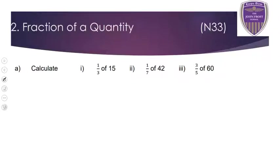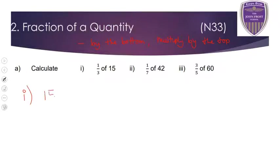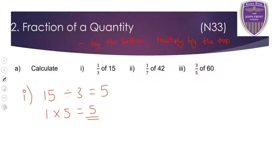Moving on to fraction of a quantity. For this one, we need to remember the rule: divide by the bottom and then multiply by the top every time. For part 1, 1 third of 15 — you do the big number divided by the bottom. 15 divided by 3 is 5, because 3 times 5 is 15. Then times by the top — 1 times 5 is still 5. When we're multiplying by 1 on the top, it doesn't change our answer.